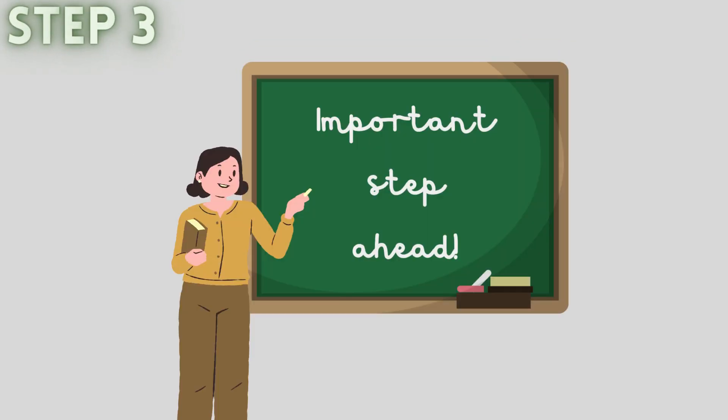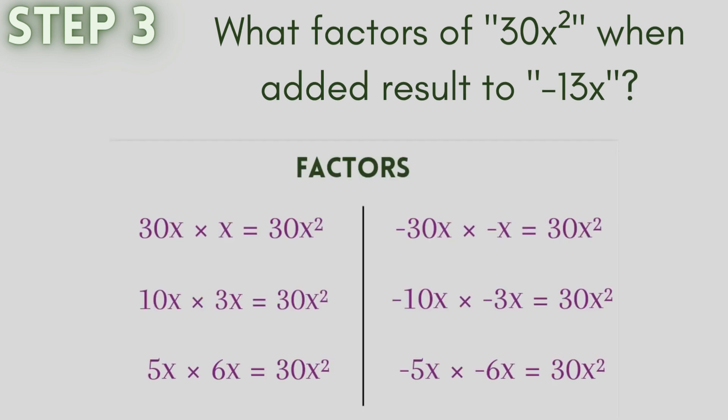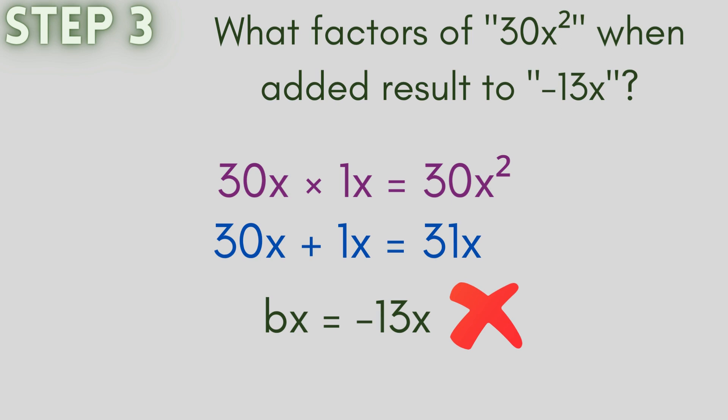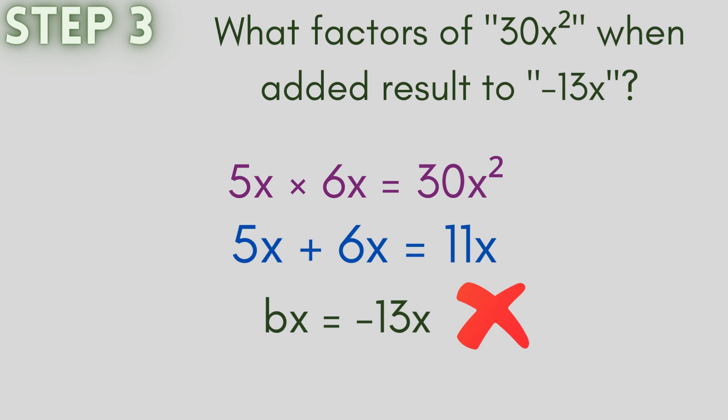We will now move on to step 3 which is by far the most important step. Step 3 is to figure out what factors of 30x² when added result to minus 13x. Consider the pair of factors of 30x², 30x and 1x. When we add them, we do not obtain minus 13x. So let us consider another pair of factors of 30x² that are 5x and 6x. When they are added, we get 11x. That again does not equal to minus 13x.